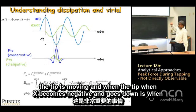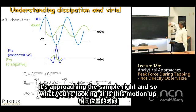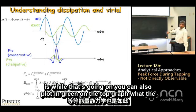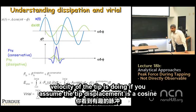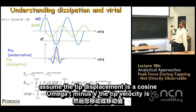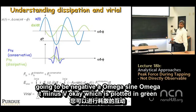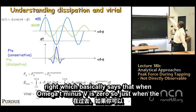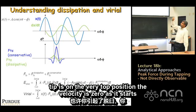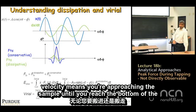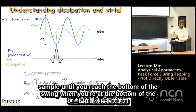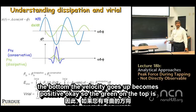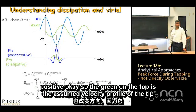You can also plot in green the velocity of the tip. If tip displacement is A cos(ωt − φ), tip velocity is −Aω sin(ωt − φ). When ωt − φ is zero, the tip is at the top and velocity is zero. As it approaches the sample, velocity becomes increasingly negative. At the bottom of the swing, velocity is again zero, then becomes positive as the tip swings back up.